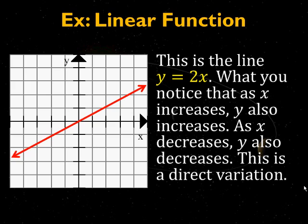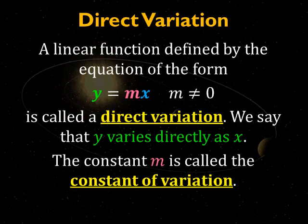Now, a linear function back in chapter three. This is the line y equals 2x. What you notice is that as x goes up, y goes up as well. As x goes down, y also goes down. This is what we call the direct variation, and it takes the form of a line, generally speaking.